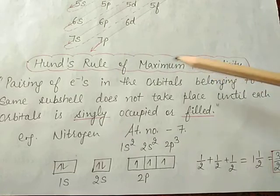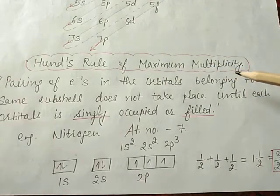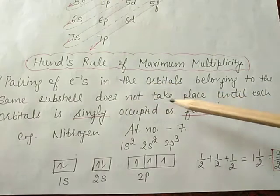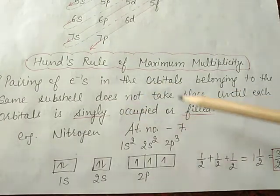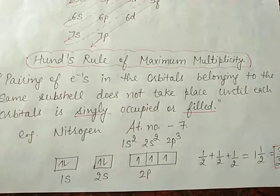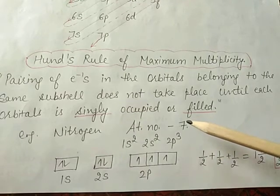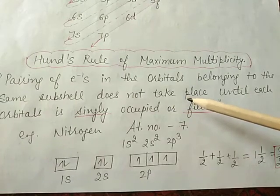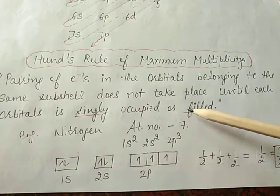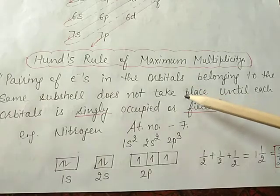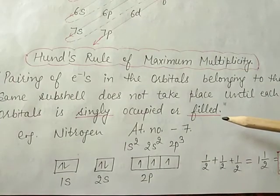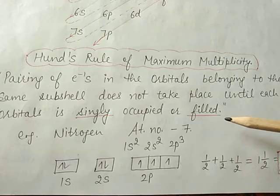The next rule is Hund's rule of maximum multiplicity. It states that pairing of electrons in the orbitals belonging to the same subshell does not take place until each orbital is singly filled. This means if electrons are present in the same orbital, since electrons have the same charge they repel each other. To minimize this repulsion, the two electrons move as far apart as possible by occupying different degenerate orbitals or having parallel spin.